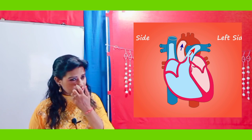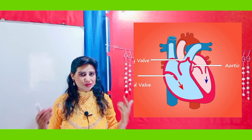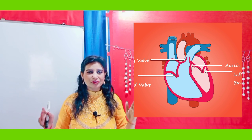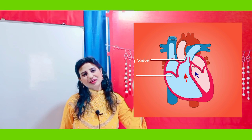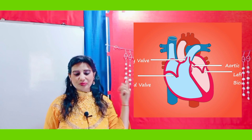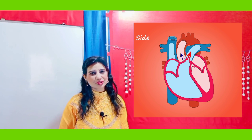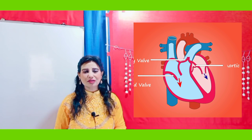Now we need to understand the structure of the human heart. Please follow the diagram. Diagrammatically, the left side of the heart — see, right now I am standing, so this is my right and this is my left. When you are drawing, always remember: if you draw the diagram, the left will go to the opposite side — so left will be on the right side of the diagram and right will be on the left. The human heart has four chambers: two atria and two ventricles.